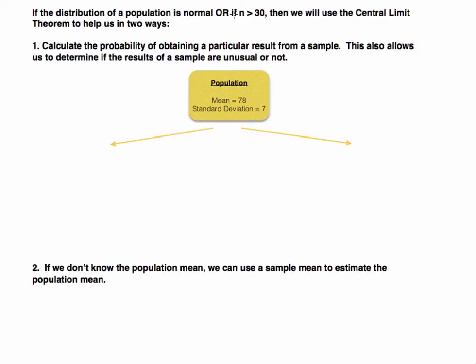This week we're going to focus on calculating probabilities associated with obtaining a particular result. So what's the probability of obtaining a sample mean of 30 if I know that the population mean is 28? Those are the types of questions we want to answer. If we're able to calculate probabilities for obtaining a particular statistic value, such as a mean, then we're also going to be able to determine whether or not the result of a sample is unusual.